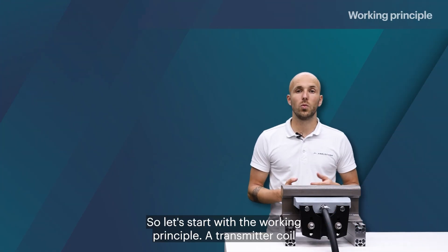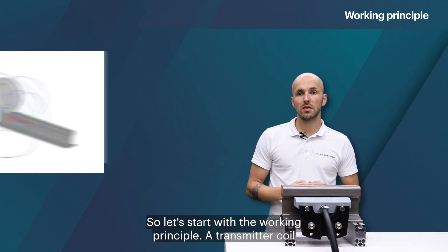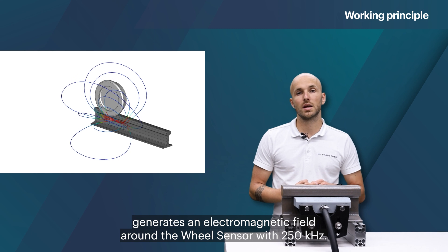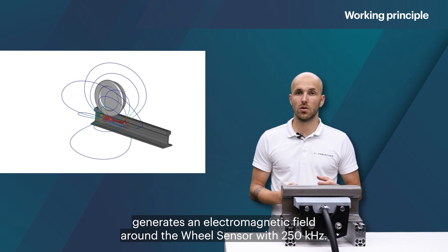So let's start with the working principle. A transmitter coil generates an electromagnetic field around the wheel sensor with 250 kilohertz.